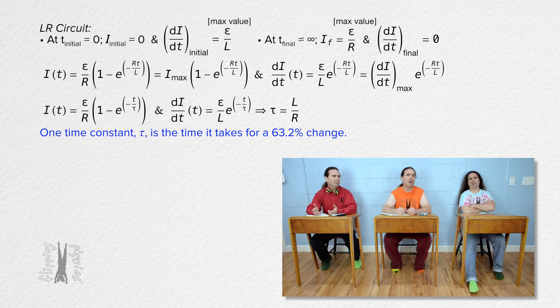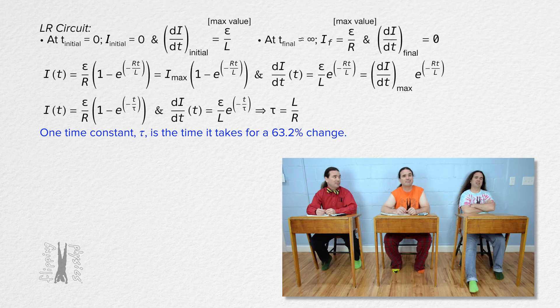How do you remember that? Mr. P told us that one time constant representing the time for a 63.2% change in the variable was an important number to remember.